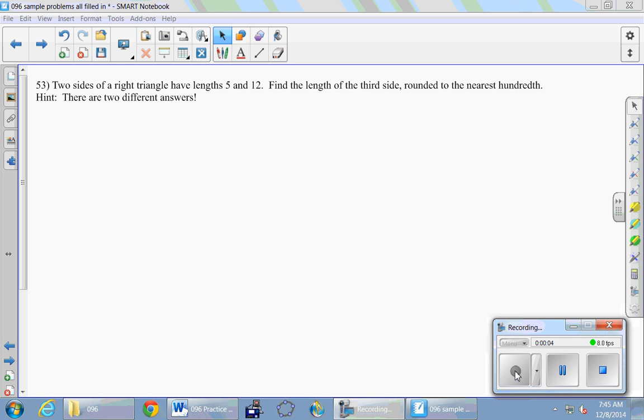Two sides of a right triangle have lengths 5 and 12. Find the length of the third side rounded to the nearest hundredth. Hint, there are two different answers.